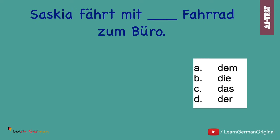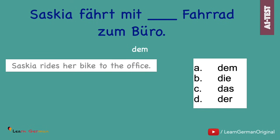Hier ist der nächste Satz. Saskia fährt mit... Fahrrad zum Büro. Which article is correct? And the answer is: Saskia fährt mit dem Fahrrad zum Büro. Mit is a dative preposition, so das Fahrrad changes to dem Fahrrad.